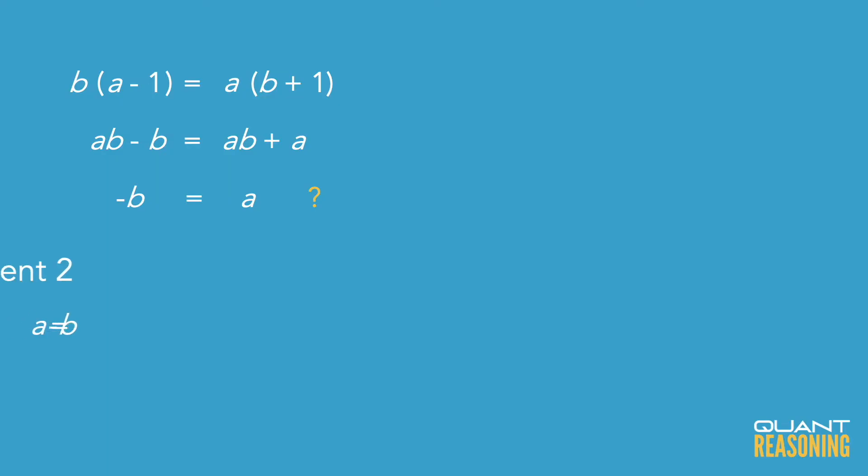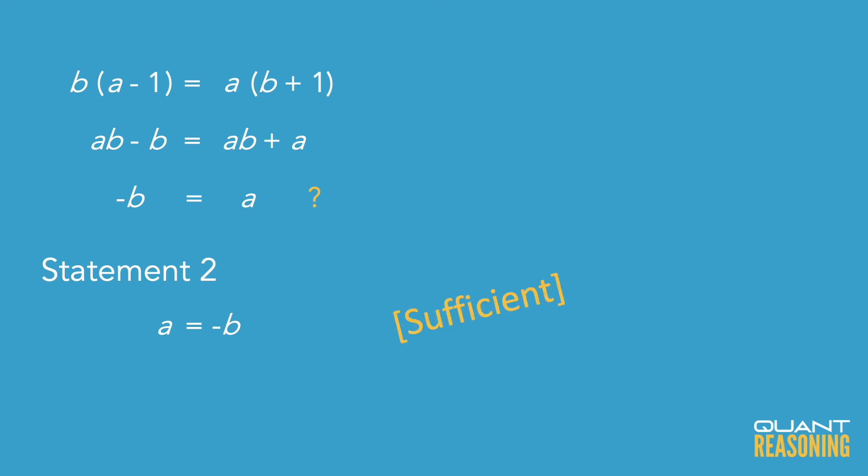Statement 2 says exactly that — a and b are mirror images of one another on the number line. So statement 2 is sufficient on its own, and we can eliminate answer choices A, C, and E.